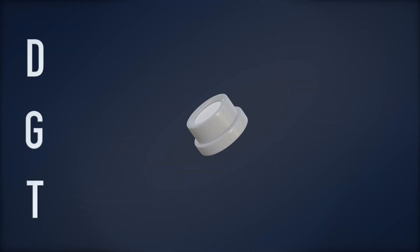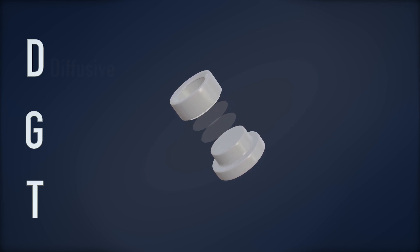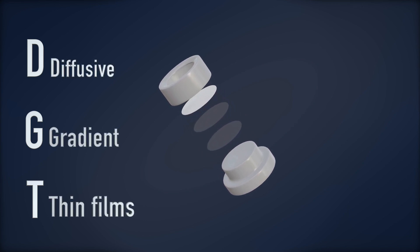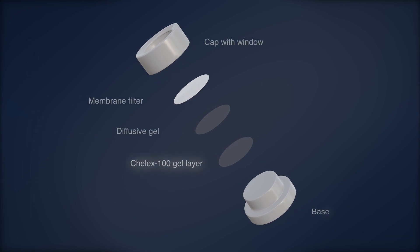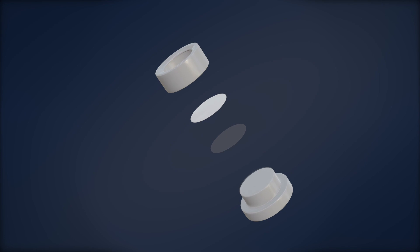But what is a DGT? DGT stands for Diffusive Gradient in Thin Films. A DGT is a passive sampler that is deployed directly in waters for five days, allowing the labile metals to accumulate onto the Chelex 100 gel layer of the device during the entire deployment period.